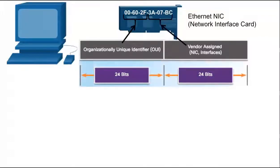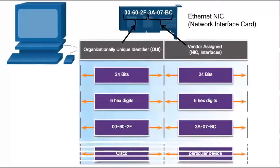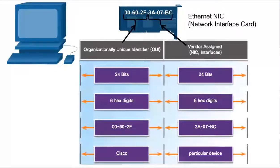MAC addresses are 48 bits, with the OUI and vendor-assigned portions each being 24 bits. MAC addresses are typically represented in hexadecimal, with six hexadecimal digits for each portion.